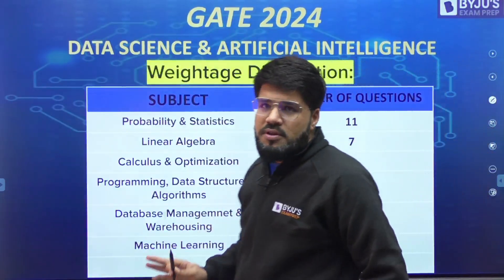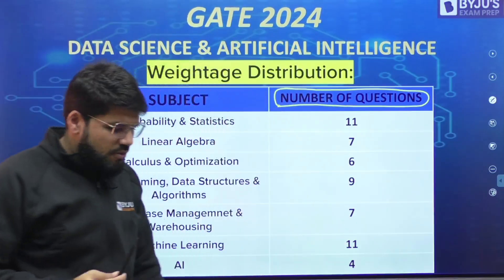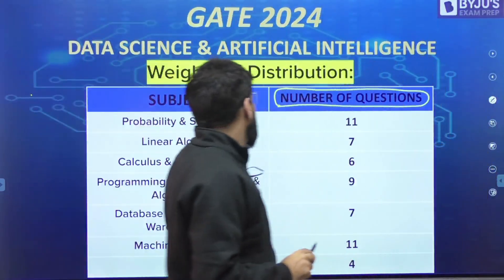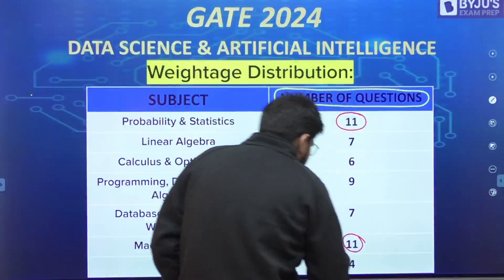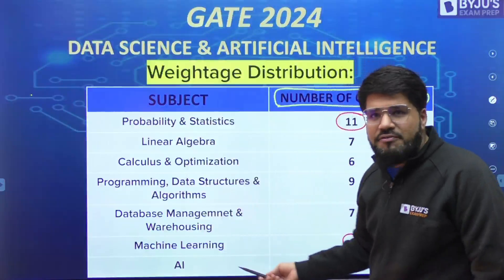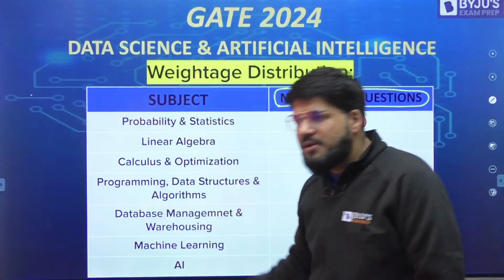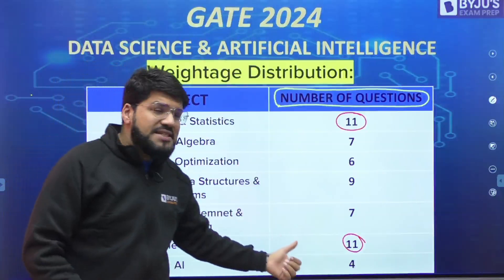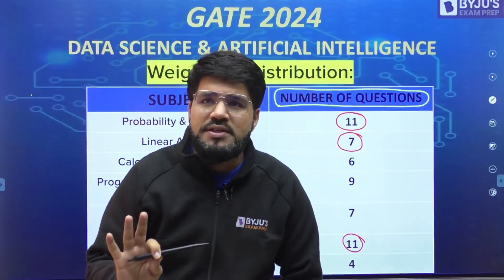As per the sample paper, here is the weightage distribution in terms of number of questions. Probability and Statistics: 11 questions — the highest. Machine Learning: also 11 questions — equally the highest. As expected, these are the two major areas. Linear Algebra: 7 questions, and all of them are easily doable if you've prepared thoroughly.